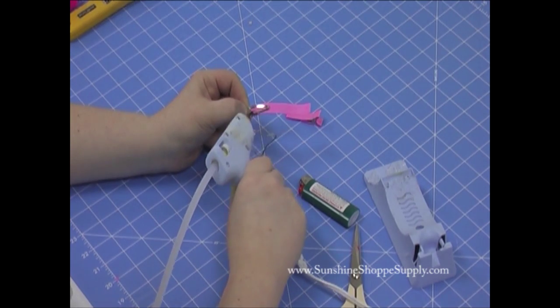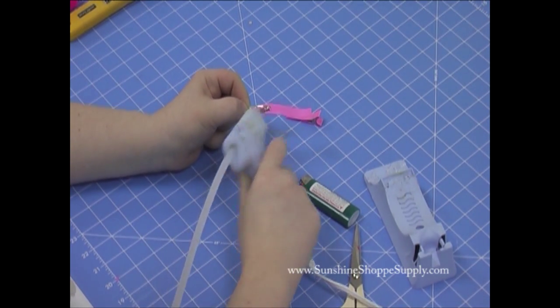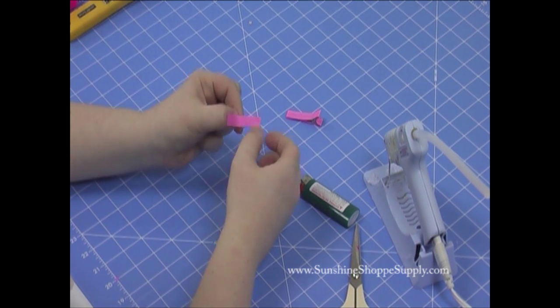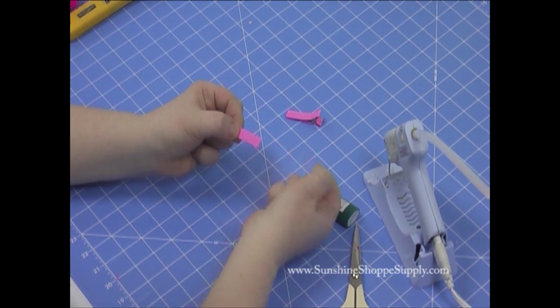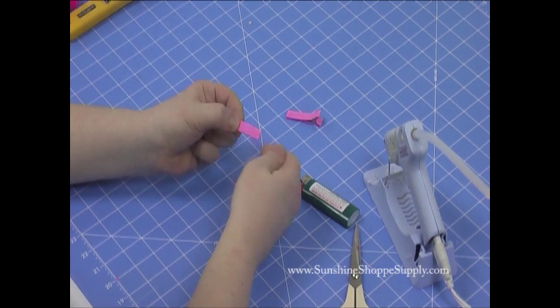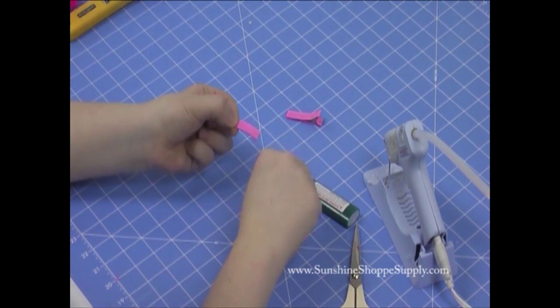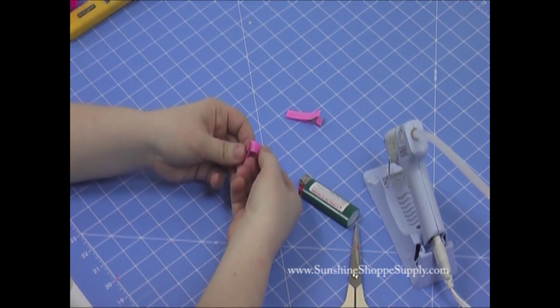This one I just put the glue like this and fold the ribbon over. Just be sure to smooth it out. Sometimes you'll have a little bit of glue coming off the end. You just can pull that off.